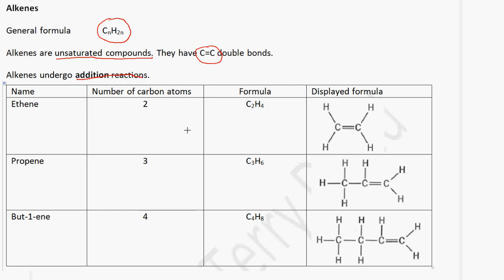The first member of this series has two carbon atoms, because we need to have a double bond. So the formula will be C2H — using the general formula, it will be 2 multiplied by 2, which is 4. So the formula is C2H4. We draw two carbon atoms with a double bond and we end up with this displayed formula. Keep in mind that carbon can only form 4 bonds around itself.